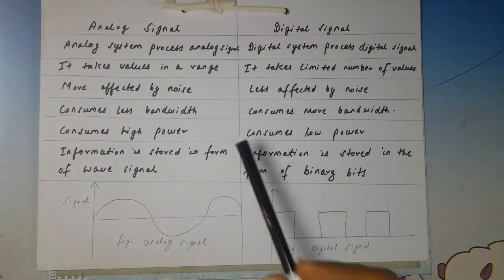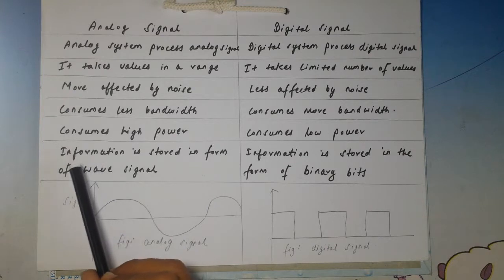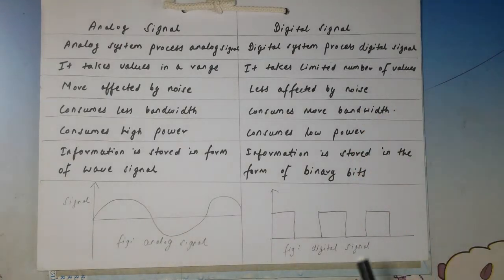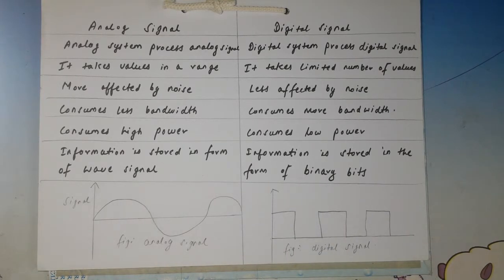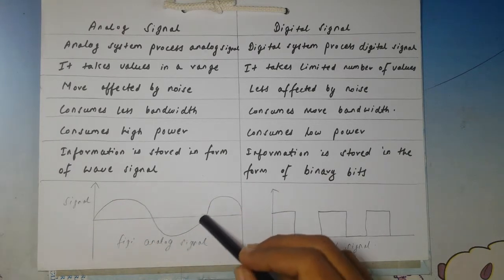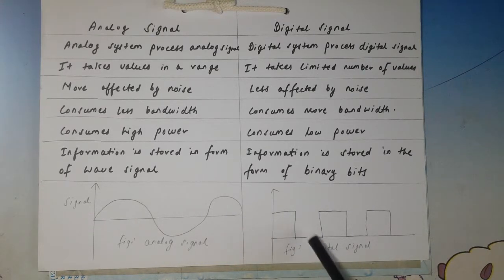Digital signal consumes much lower power compared to analog signal. Also, in analog signal, information is stored in the form of a wave — like a sine wave. In digital signal, information is stored in the form of binary bits represented as a square wave, where high represents one and low represents zero. The values in an analog signal can go below zero, but in a digital signal they do not.